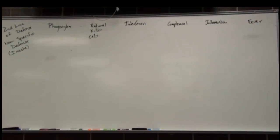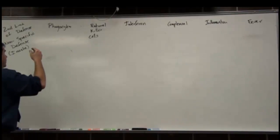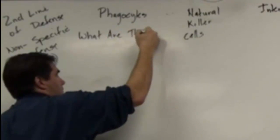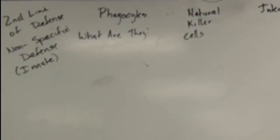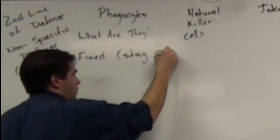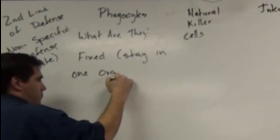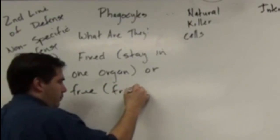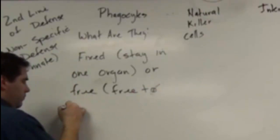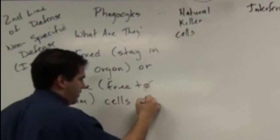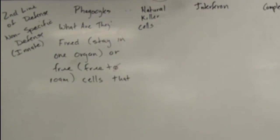Basically I'm going to break them down into two questions. The first one is, what are they? And what they are, are fixed and free. Fixed, which means they stay in one organ. Or free, which means free to roam. Cells.